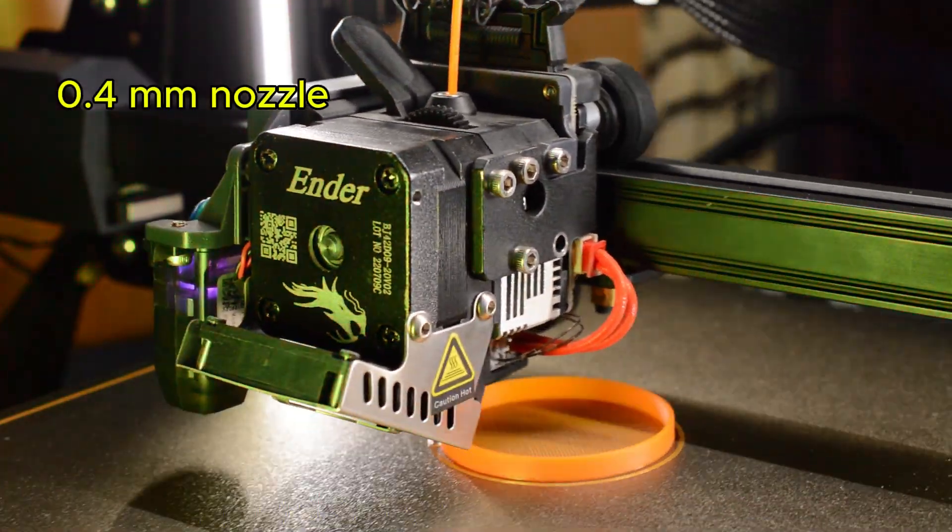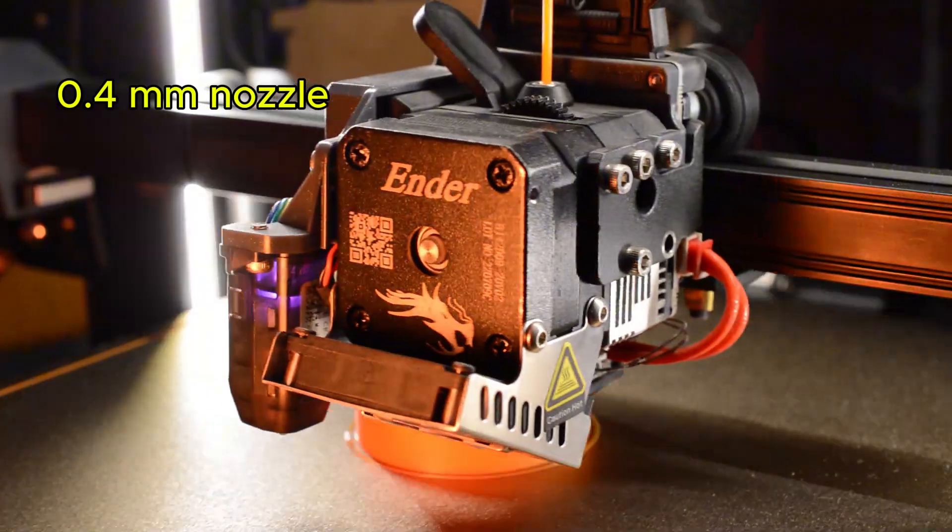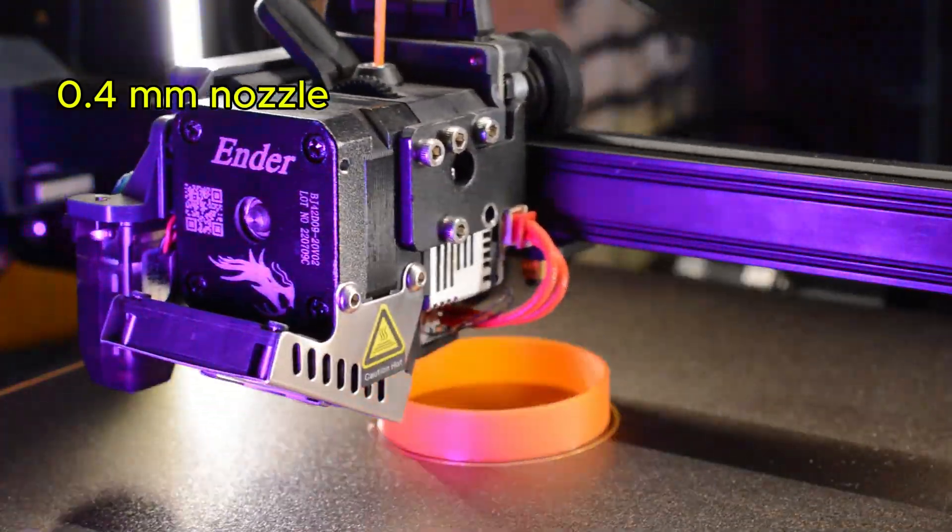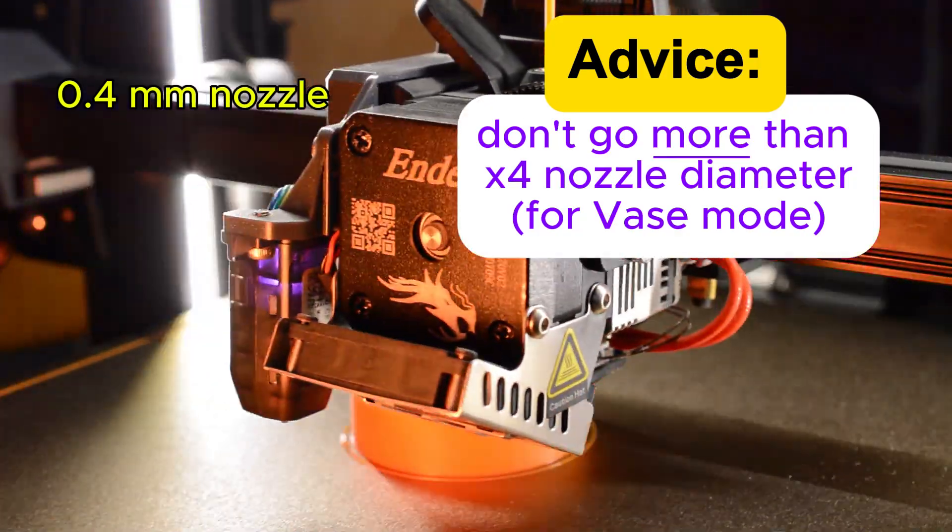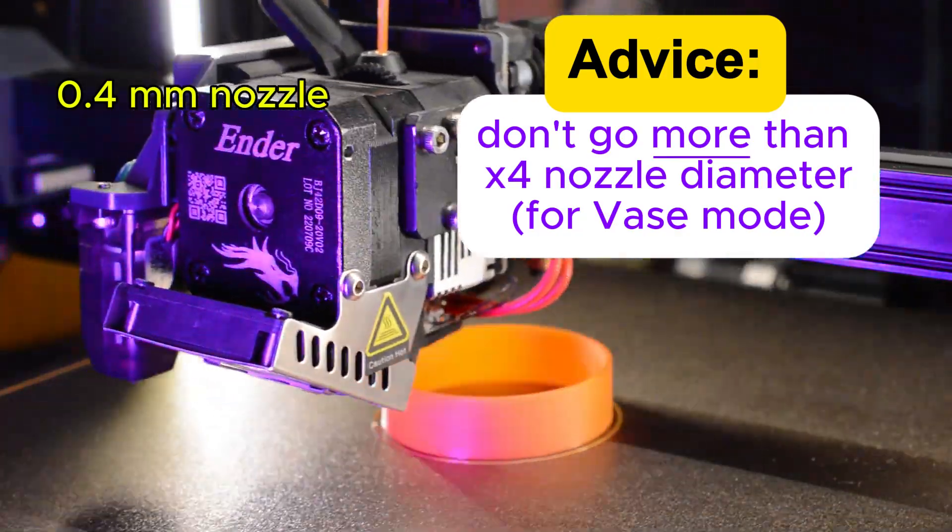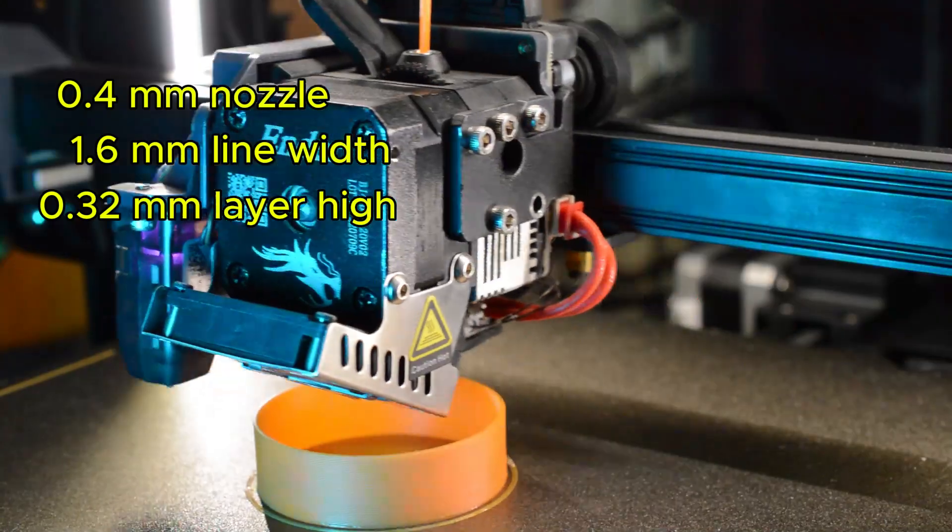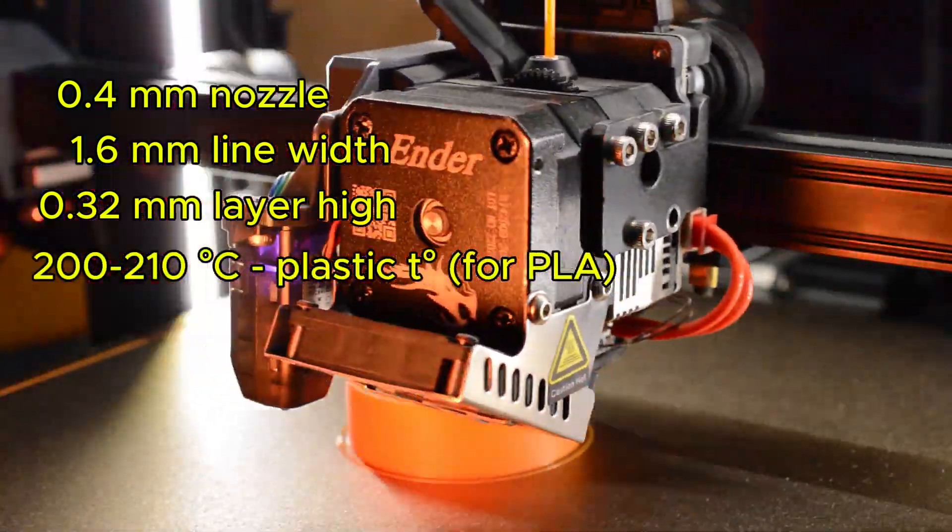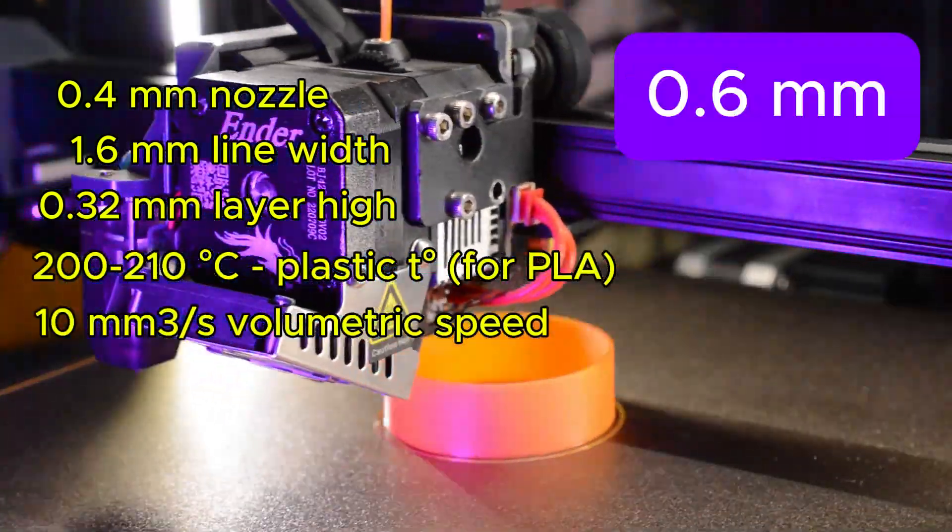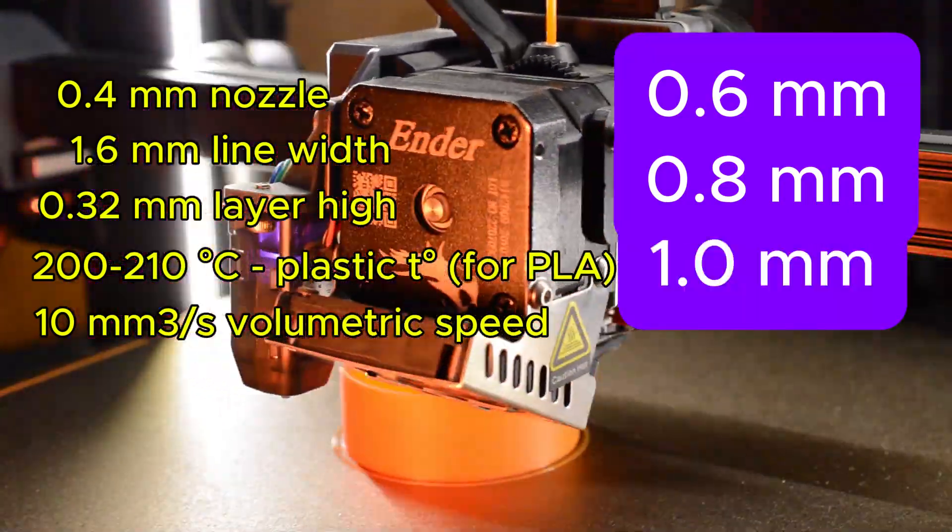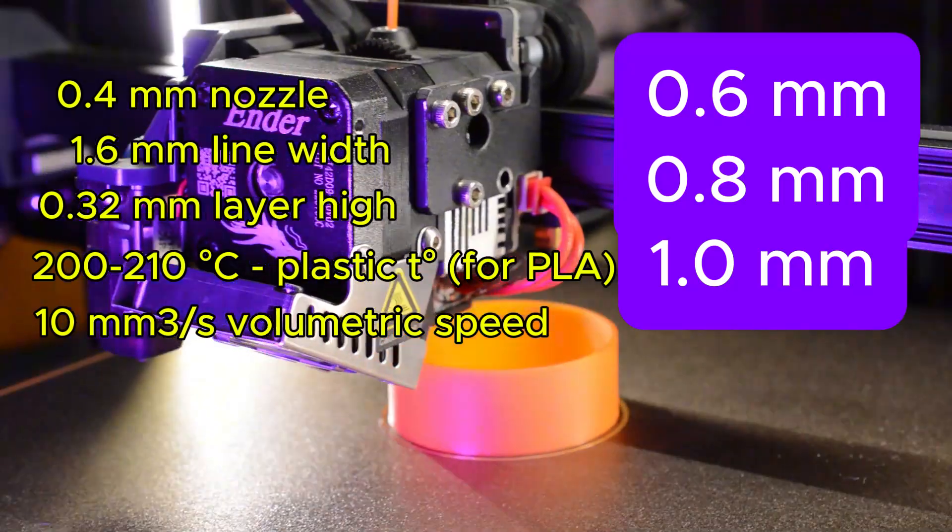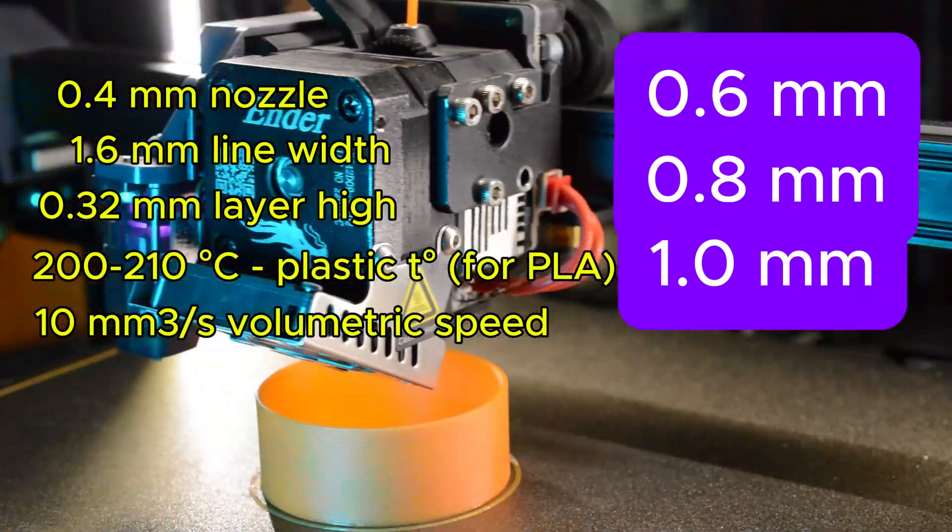0.4 mm nozzle allows you to print 2 mm lines with small quality artifacts, but I suggest to avoid going 4 times higher than your nozzle diameter. So for me 1.6 mm is good enough. If you want more then replace nozzle to 0.6, 0.8 or 1 mm. Nozzle platform is going to be bigger obviously, which gives you an opportunity to print wider lines.